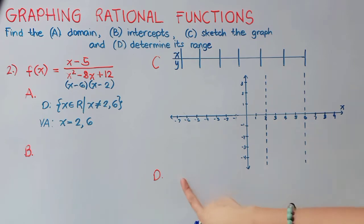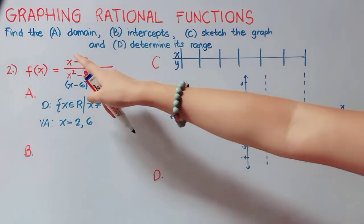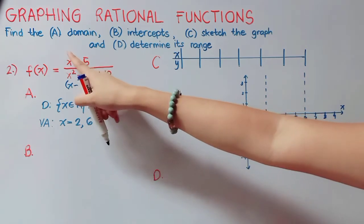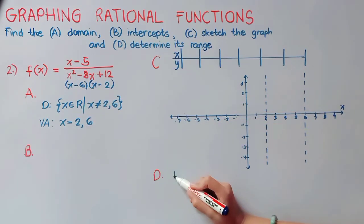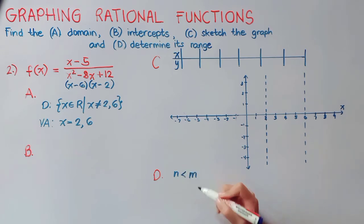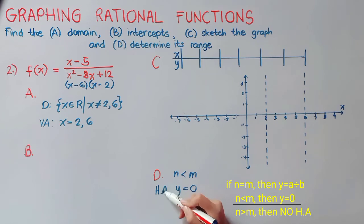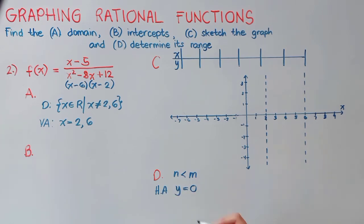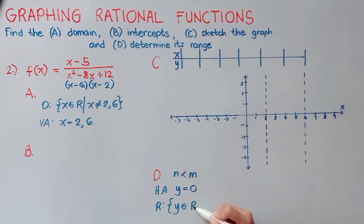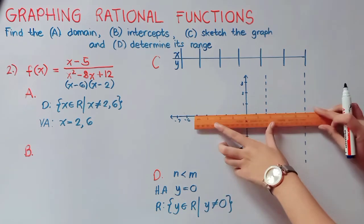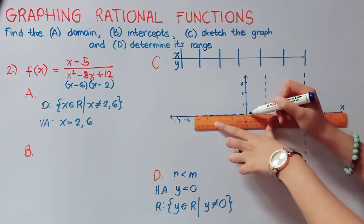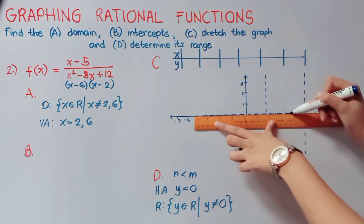Let us now get our range. Looking at the degree in the numerator, we have 1, and the degree in our denominator is 2. Therefore n is less than m. In this case, our y is automatically 0. Therefore our horizontal asymptote is the line y equals 0, and our range will be patterned to that: y is an element of real numbers except 0. Let us plot our horizontal asymptote at y equals 0.